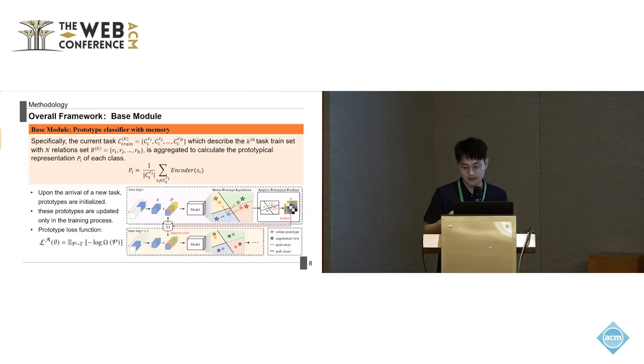In our approach, the basic module is a prototype classifier with memory. This prototype representation is computed as the mean vector of the encoded representation of samples belonging to that relation. Upon the arrival of a new task, these prototypes are initialized like the right figure. During the training process, the prototype for each relation is updated to maximize the distance between different relation prototypes. The underlying intuition here is to enhance the discriminative power of the classifier by increasing the distance between similar prototypes.